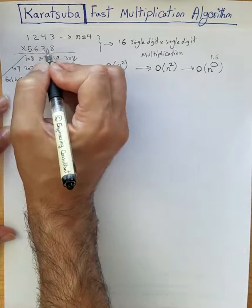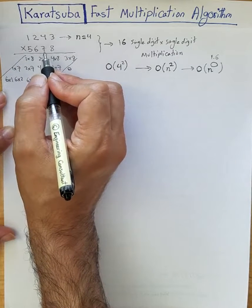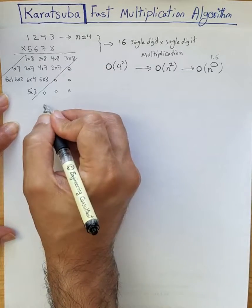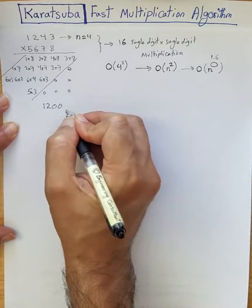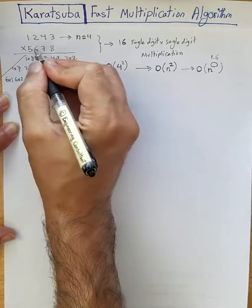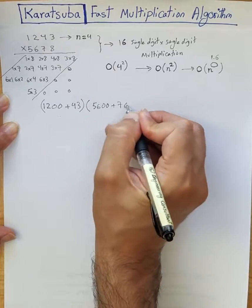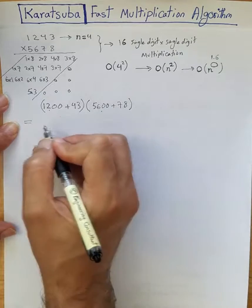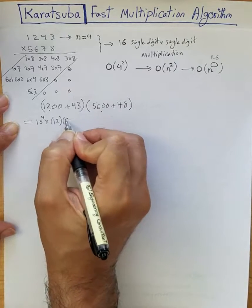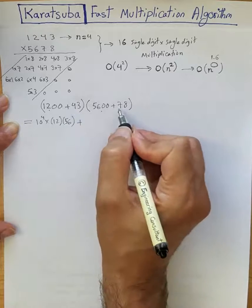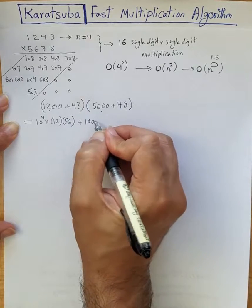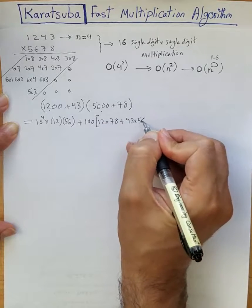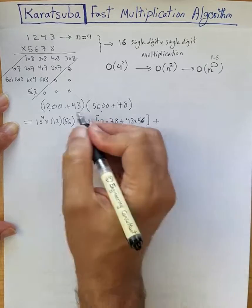Let's generalize the problem, sticking with 4-digit by 4-digit multiplication. We want to deal with 1,234 times 5,678, which we can write as (1200 + 43) times (5600 + 78). In Karatsuba's method, we rewrite 1200 times 5600 as 10^4 times 12 times 56, plus 1200 times 78 plus 43 times 5600, giving us 100 times (12 times 78 + 43 times 56) plus 43 times 78.